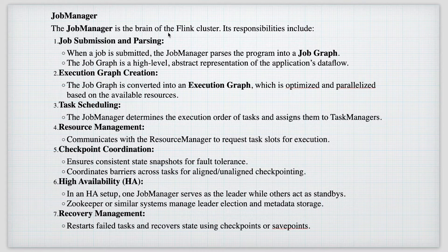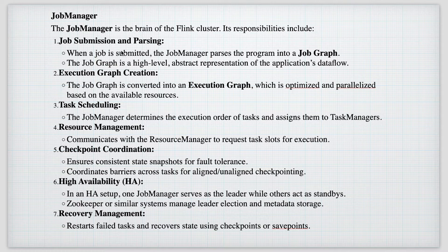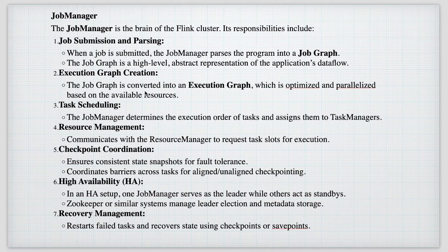The Job Manager is the control plane of the Flink cluster. Its responsibilities include job submission, execution graph creation, task scheduling, resource management, checkpointing, high availability, and recovery management. When a job is submitted, the Job Manager parses the program into a job graph — a high-level abstract representation of the application data flow. The job graph is then converted into an execution graph, which is given to the Task Manager. Inside the task slots, the execution graph is split into tasks and executed. The Job Manager determines the execution order and assigns tasks to Task Managers.